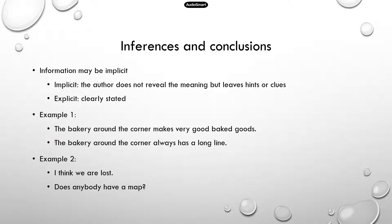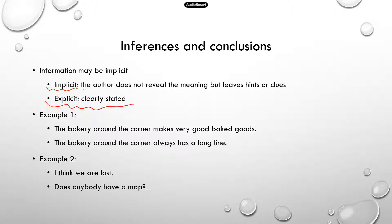Now when you read something, there is some information that's explicit, which is clearly stated, so it's very easy to identify. But a lot of the information is implicit — that means the author does not make it very clear in the writing, but leaves hints or clues for you to figure out, for you to make inferences, for you to draw conclusions.